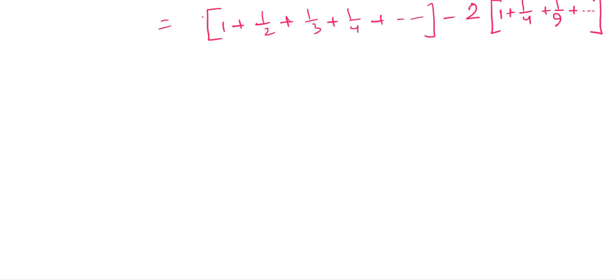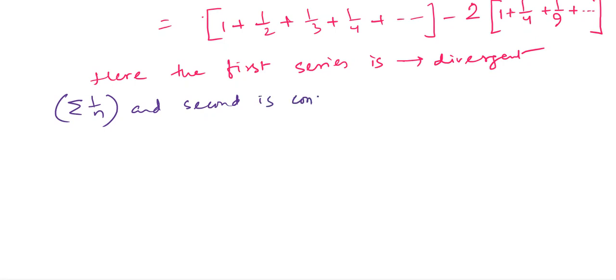Here the first series is divergent and second is convergent. Convergent because summation of 1 by n square. So their sum is divergent plus convergent. What is the sum? The sum is also divergent.